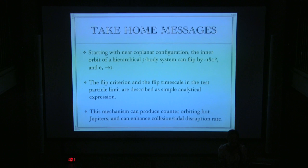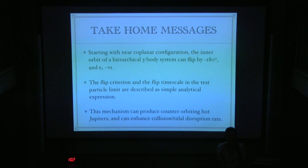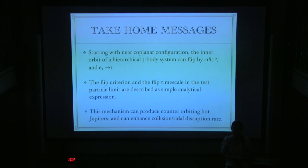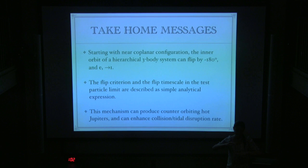Question: When the bigger body reaches a highly eccentric state approaching eccentricity one, is there a risk of collision, particularly with a very evolved star with large cross-section? Reply: Yes — the coplanar flip and high-inclination flip can produce high rates of collision and tidal disruption events. In Monte Carlo simulations, about 80% of systems end up with a tidal disruption event and about 20% survive.